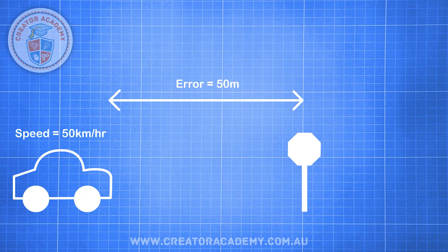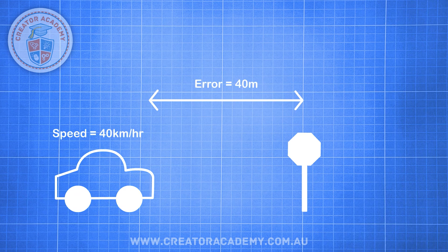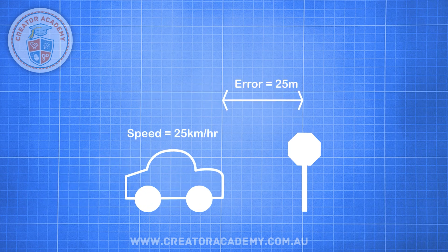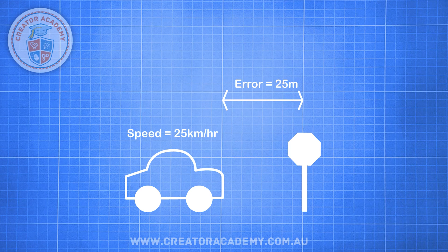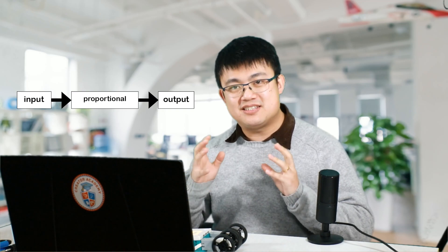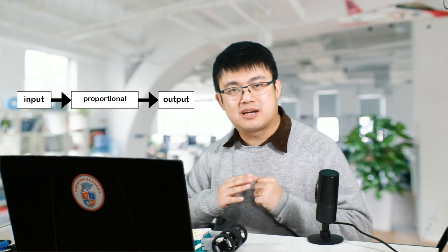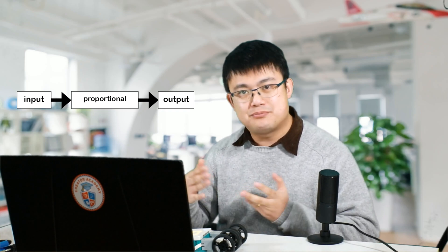We can design our controller to change the speed of the car in kilometres per hour equal to the distance to the stop sign — or error — in metres. At 50 metres away, the car sets its speed to 50 km/h. At 40 metres, it sets speed to 40 km/h, and at 25 metres, 25 km/h, and so on, until it comes to a gradual stop at the stop sign. This is called a proportional controller, where we link the speed of the car to the error of our current position. When we are further away we travel quicker, and as we approach the target, we slow down. Pretty simple stuff.